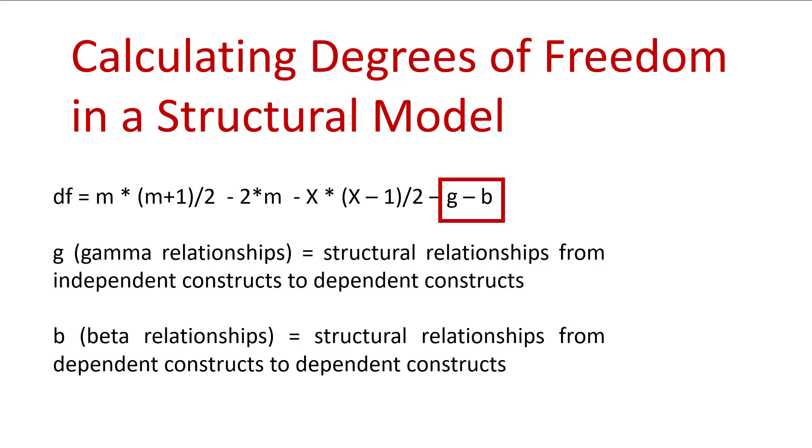When calculating degrees of freedom in a structural model, the front half of the formula is exactly the same. Except on the back half, we're now going to subtract what's called gamma relationships and beta relationships. The gamma relationships are structural relationships from independent constructs to dependent constructs. The betas are structural relationships from dependent constructs to dependent constructs. We're going to subtract those from the back end of that formula.